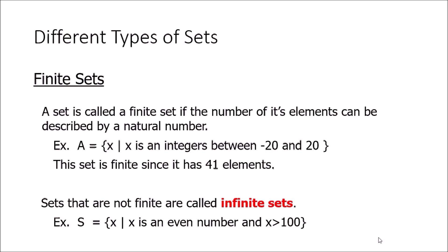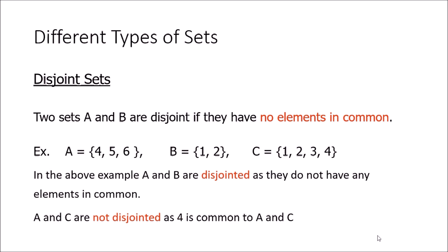Next are finite and infinite sets. A finite set has a cardinality that can be described by a natural number. For example, {x | x is an integer between −20 and +20} has 41 elements — it is a finite set. But {x | x is an even number and x > 100} contains an infinite number of elements, so its cardinality is infinite and it is called an infinite set.